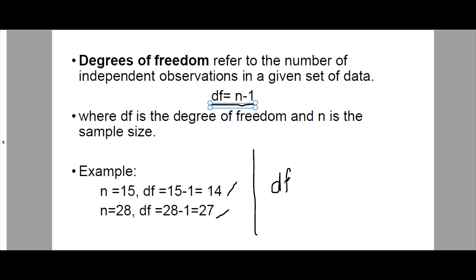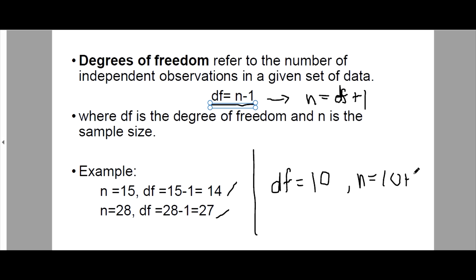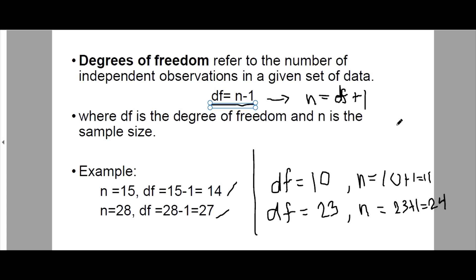If we are given the degrees of freedom, we can find n using n equals df plus 1. For example, if the degrees of freedom is 10, then n equals 10 plus 1, so the sample size is 11. If the degrees of freedom is 23, then n equals 23 plus 1, which is 24. Since degrees of freedom is based on sample size, and sample size is always positive, degrees of freedom is also always positive.